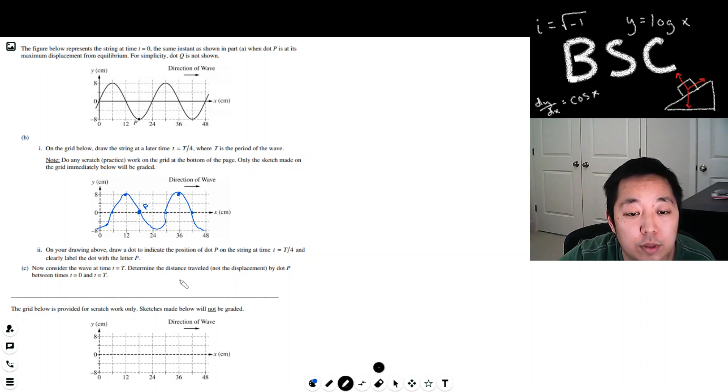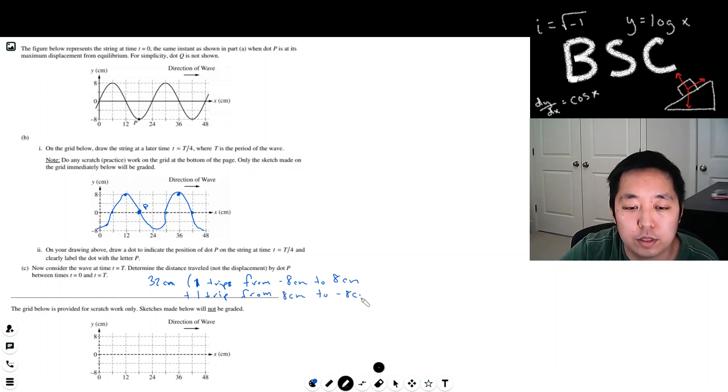And now consider the wave at time T equals T. Determine the distance traveled, not the displacement, by dot P between times T equals zero and T. So P is going to go all the way up and all the way down, right? That's the total. And its displacement would be zero because it's going to come back to where it started after one period of the wave. But it went up all the way to the top and then all the way down. So it traveled 16 centimeters to the top, 16 centimeters to the bottom, 32 centimeters. Two trips or one round trip from negative eight centimeters to eight centimeters. Zero displacement, but 32 centimeters distance traveled.